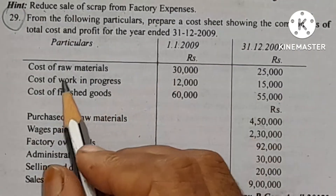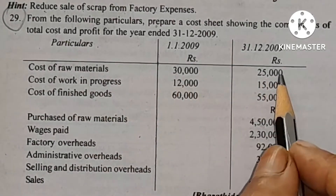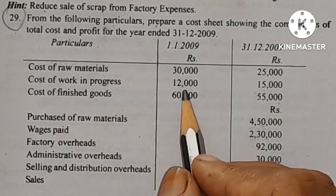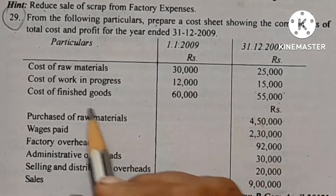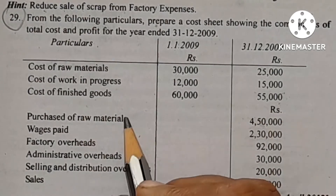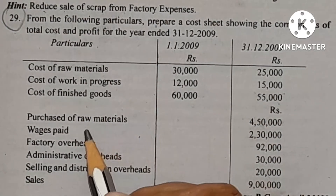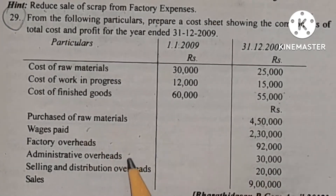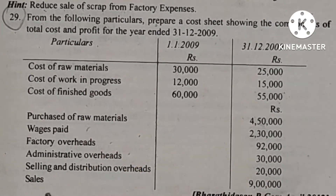The given particulars include: cost of material, opening and closing stock, working progress opening and closing, finished goods opening and closing, purchases, wages, factory overhead, administrative overhead, selling and distribution overhead, and sales.